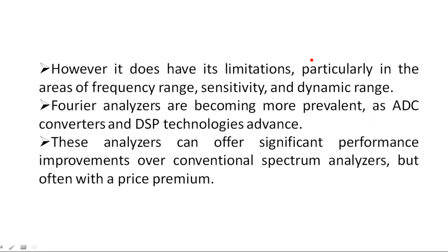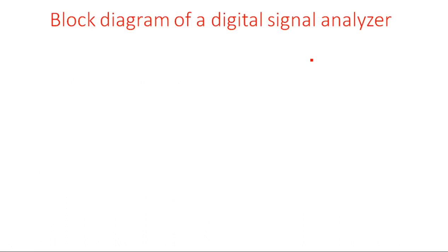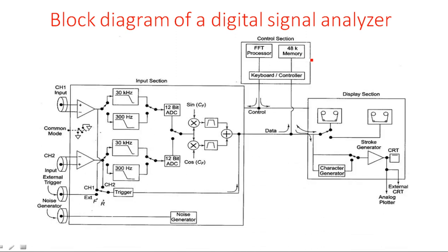The entire block diagram of the digital Fourier analyzer has been divided into three sections: input section, control section, and display section. The input section is where the input signals are applied in time domain; it has two channels — channel one and channel two. The output of the input section is given to the control section, which is a memory location where FFT processing is done. The output of the control section is then given to the display section, which displays the signal on the CRT screen.